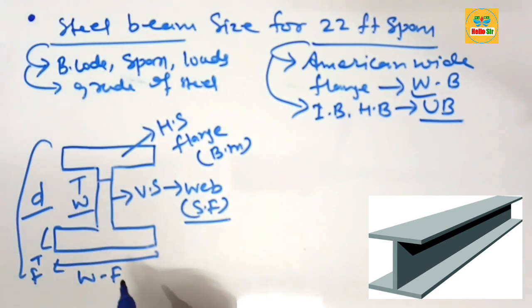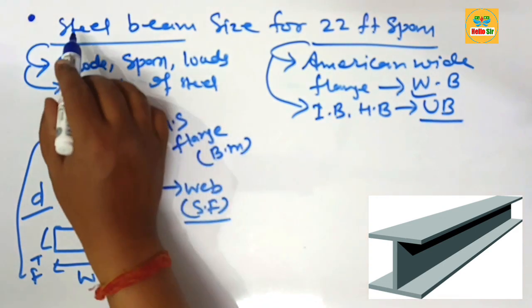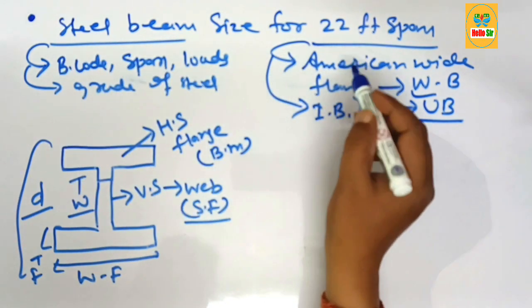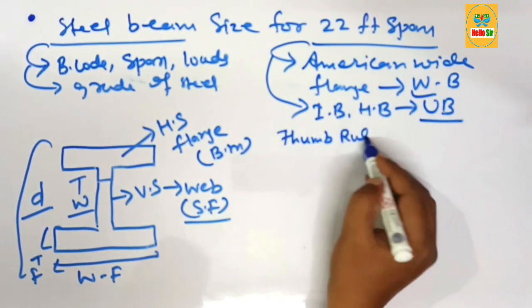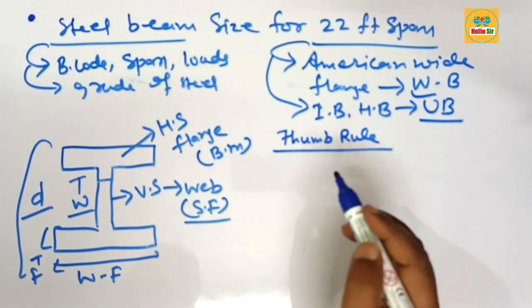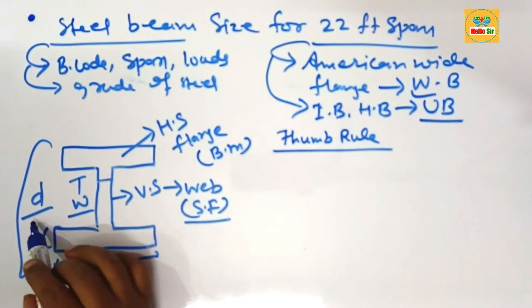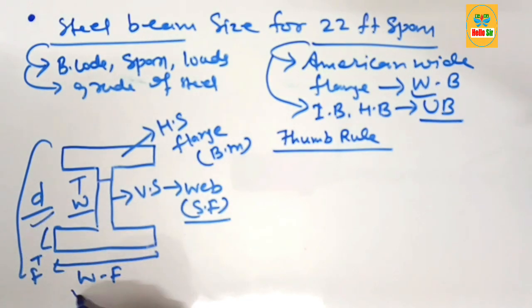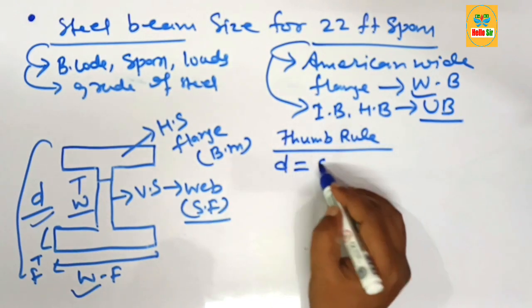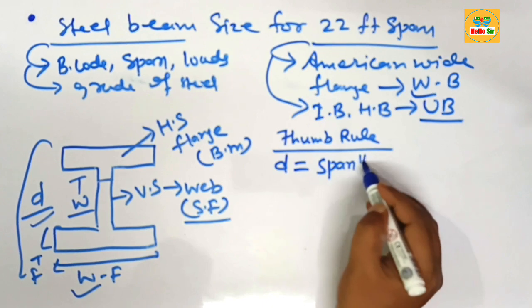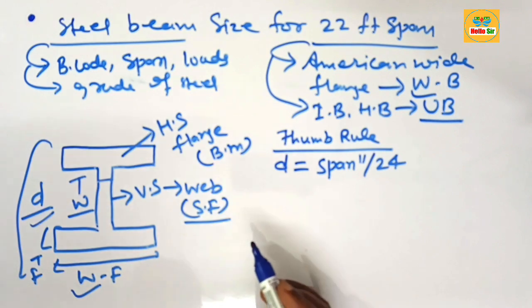Here we have to find the steel beam size for a 22-foot span. We calculate using a thumb rule for sizing steel beams for a specific span. Sizing means finding the depth section and the width section of the beam. The depth section of the steel beam should be your span in inches divided by 24.